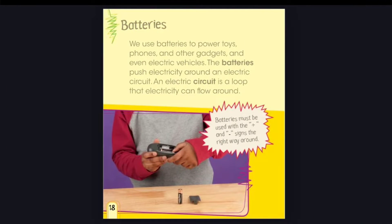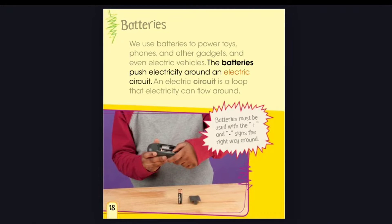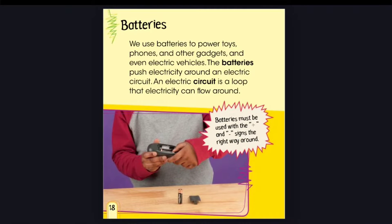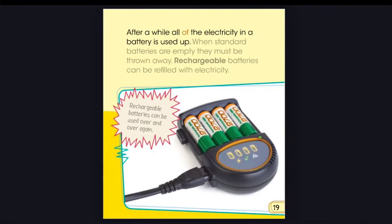Batteries. We use batteries to power toys, phones, and other gadgets, and even electric vehicles. The batteries push electricity around an electric circuit — a loop that electricity can flow around. Batteries must be used with the plus and minus signs the right way around. After a while, all of the electricity in a battery is used up.